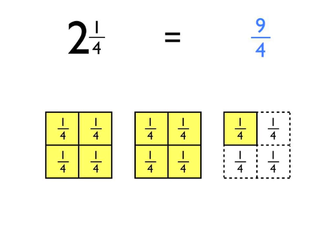So in total, there are nine quarters altogether. And so the answer to this, converting two and one quarter into an improper fraction, is nine quarters. Two and one quarter is equal to nine quarters.